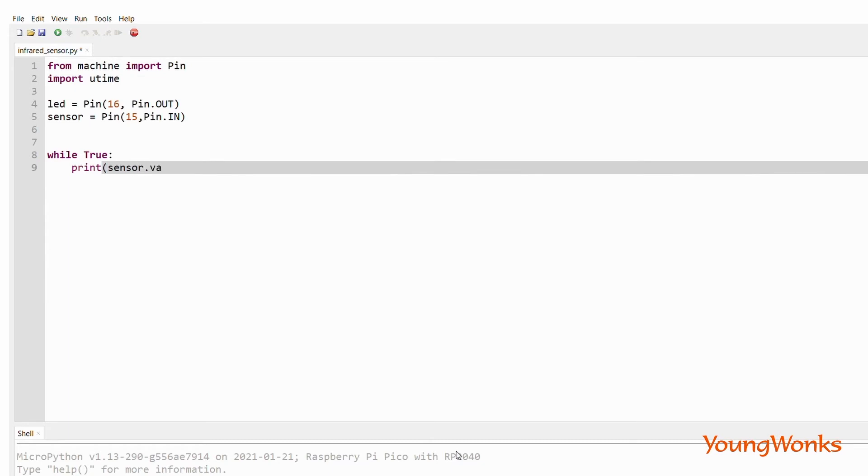And in case the sensor detects an obstacle, we set the LED to turn on. Otherwise, we turn the LED off.